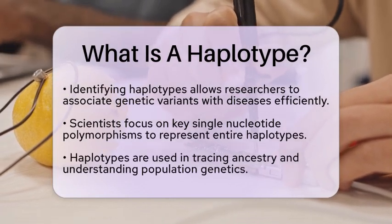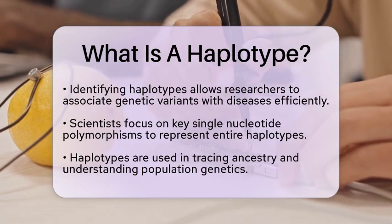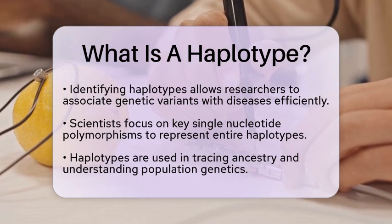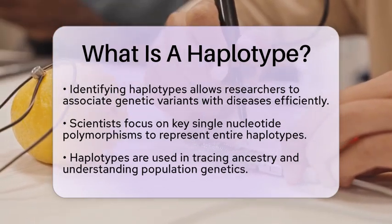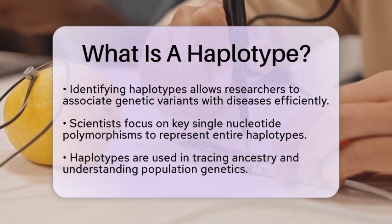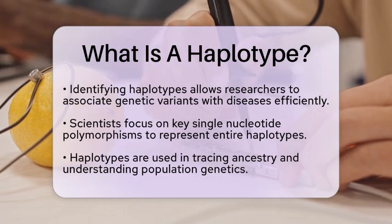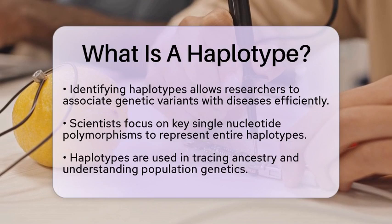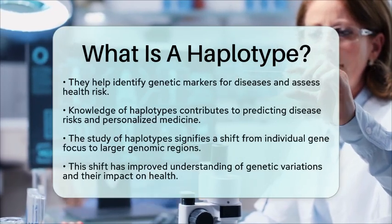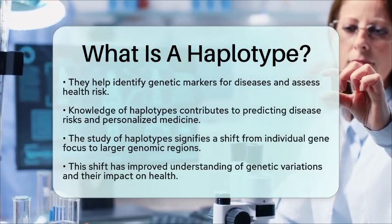Haplotypes are not just theoretical concepts — they have practical applications in genetic studies. For example, they help trace ancestry and understand population genetics. In medical genetics, haplotypes are crucial for identifying genetic markers for various diseases. Some haplotypes may indicate a higher risk for specific health conditions, allowing for early screening and preventive measures. When we look at the broader picture of human genome mapping, haplotypes have greatly contributed to our understanding of genetic diversity.